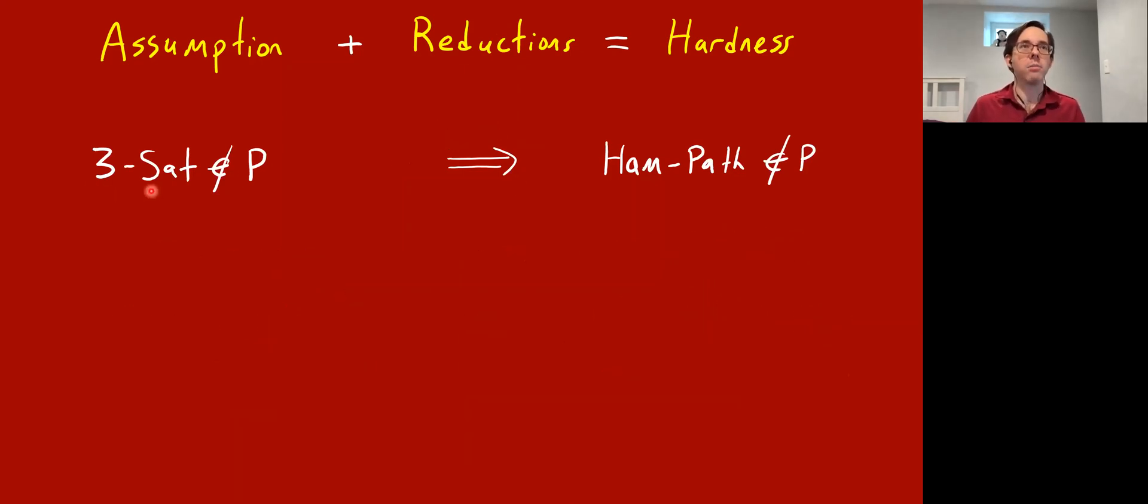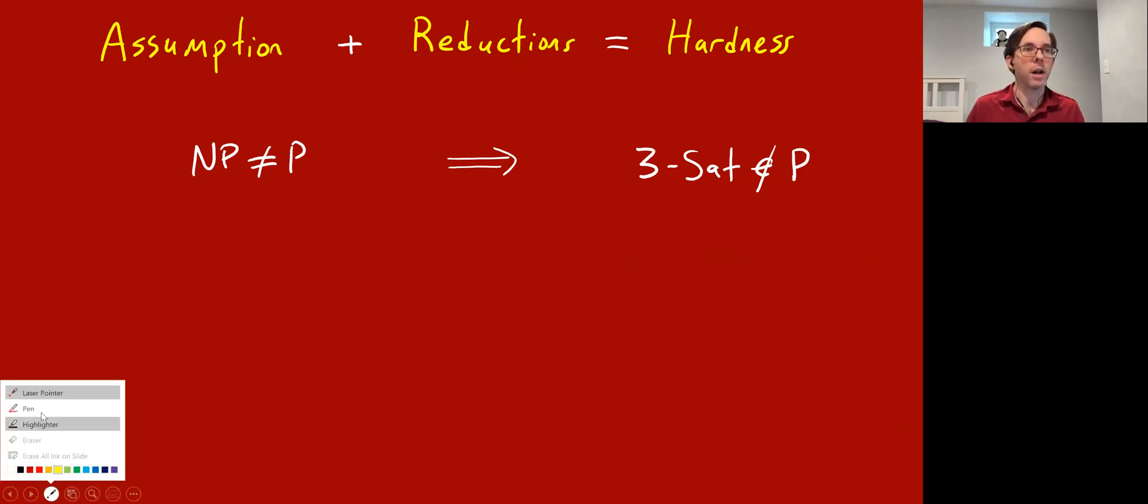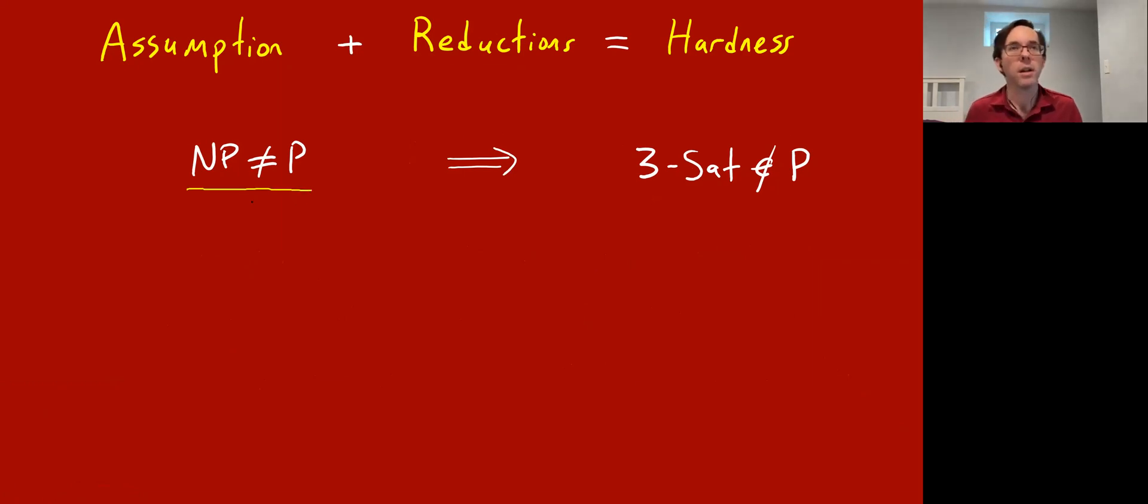In fact, even this base assumption can itself be thought of as the consequence of a reduction of this type. Namely, you can take the weaker assumption that P does not equal NP, which is to say that of all the problems in NP, there's at least one that's not solvable in polynomial time. And the reduction that allows you to prove that the specific problem 3SAT is not in polynomial time is the Cook-Levin theorem, which itself is also just an algorithm for basically transforming a Turing machine into a circuit, and then to a 3SAT 3CNF formula.